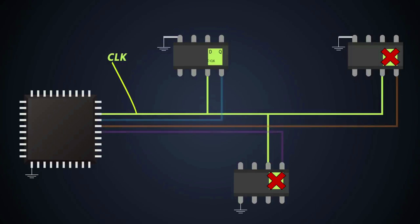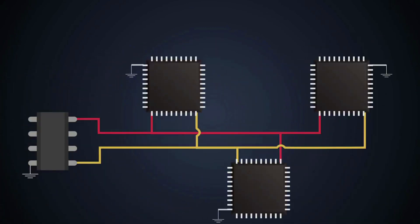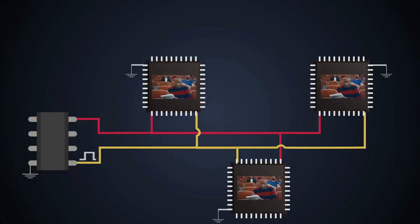In SPI communications, we can enable a device with chip select, which puts other devices into sleep mode or power saving mode. Whereas in I2C, even though the data packet is not intended for all slaves, all of them need to be awake and allow the clock signal to pass. Each slave in I2C continuously validates if the data packet is meant for it by comparing the addresses transmitted on the bus. This phenomenon consumes power dynamically.